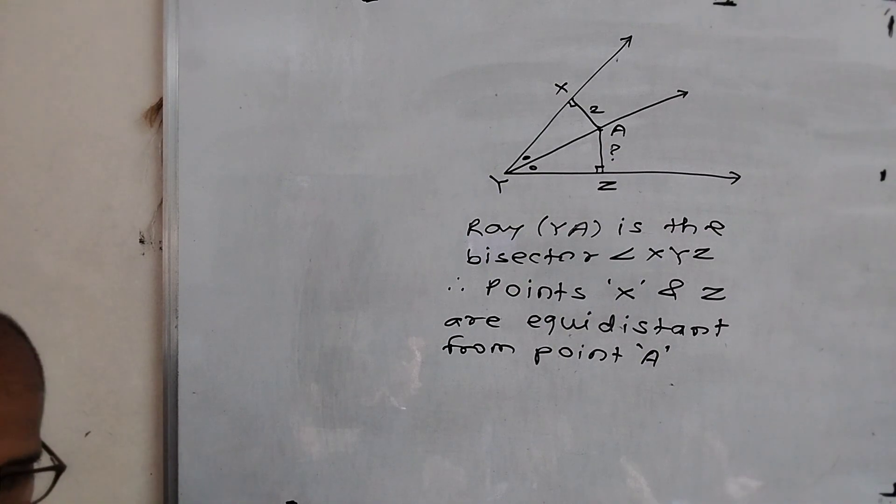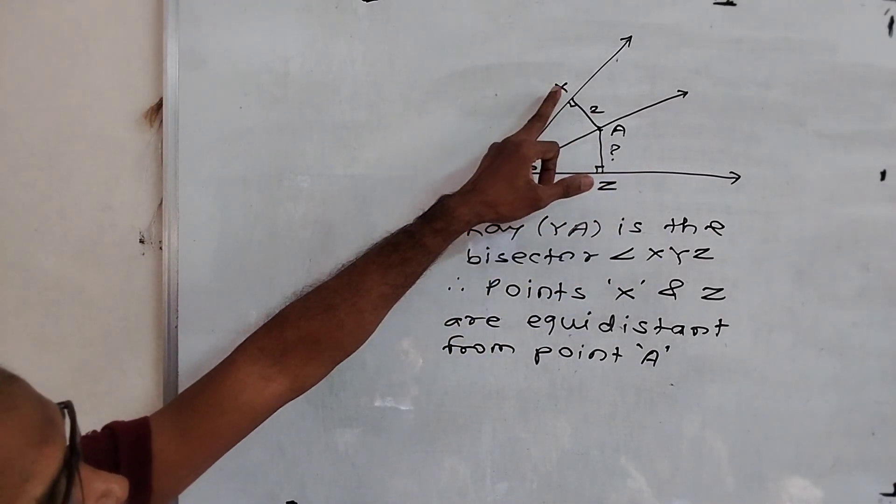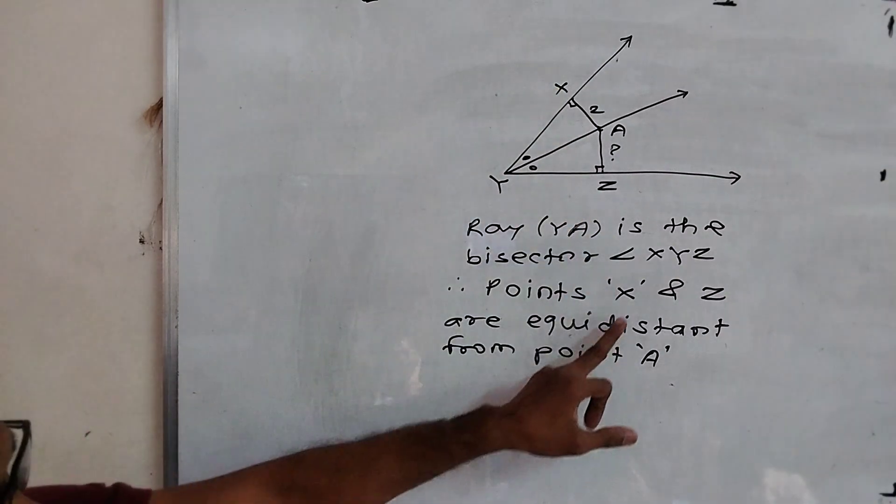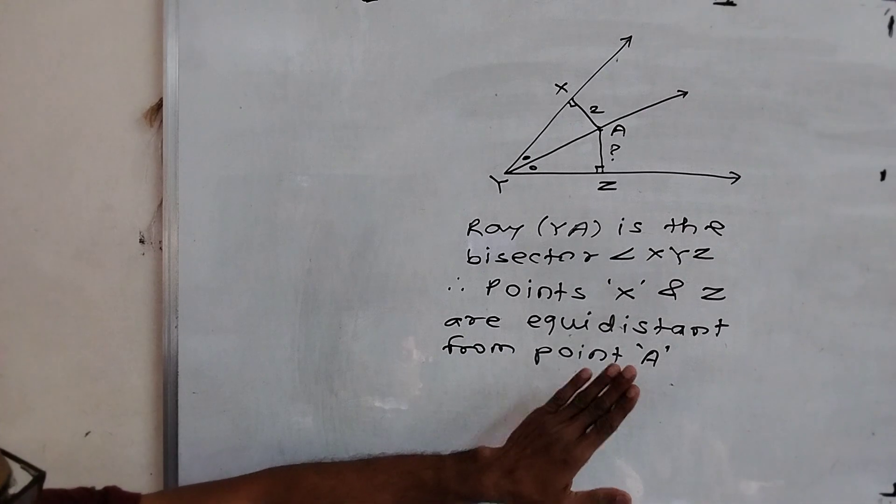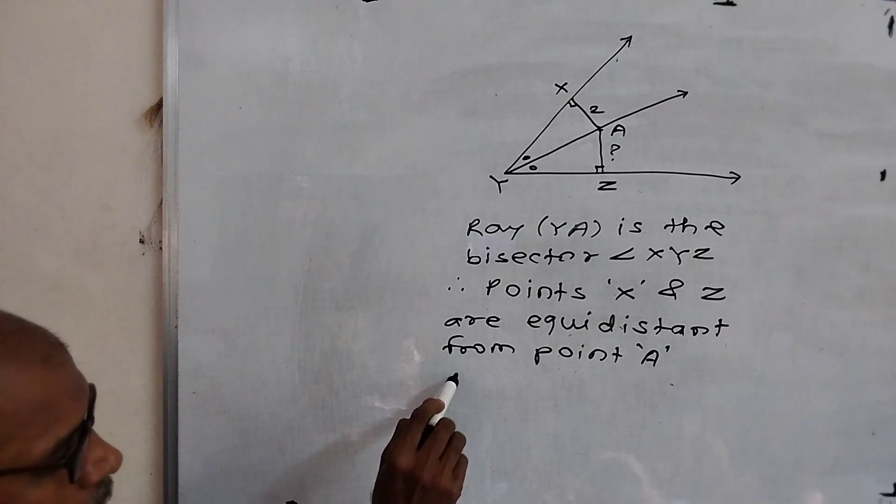Therefore, we say that points X and Z are equidistant from point A. Did you understand?